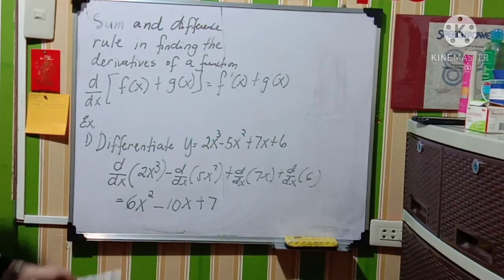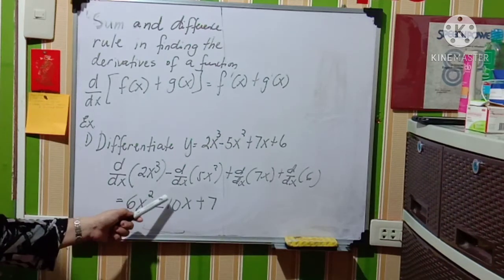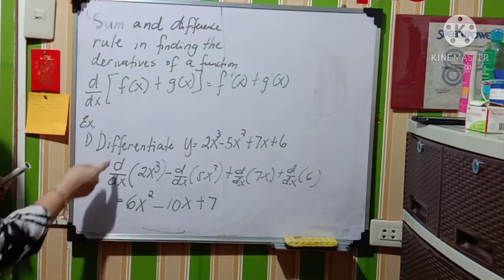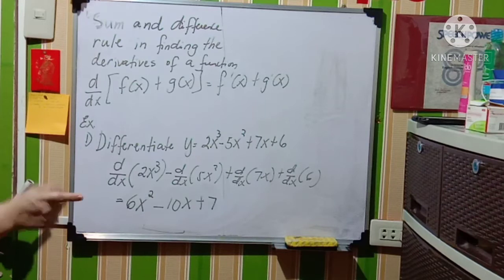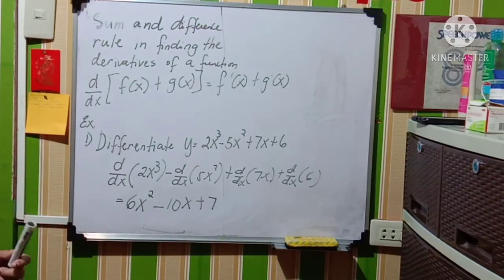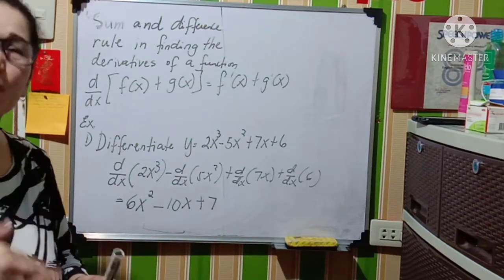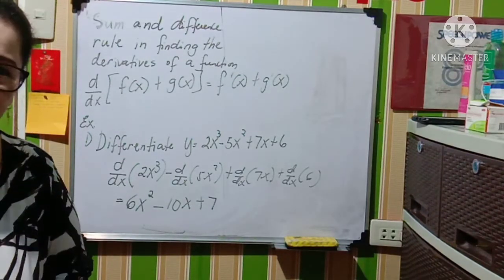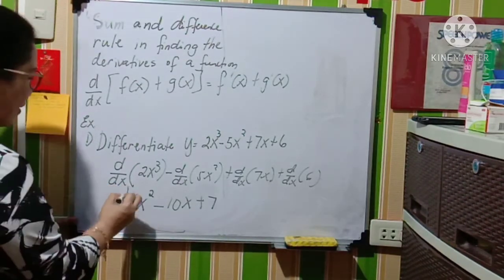So therefore the derivative of 2x cube minus 5x squared plus 7x plus 6 is equal to 6x squared minus 10x plus 7. You don't need to write d over dx y, because if you write d over dx that means you will be getting another derivative of this function. So this is now the answer.